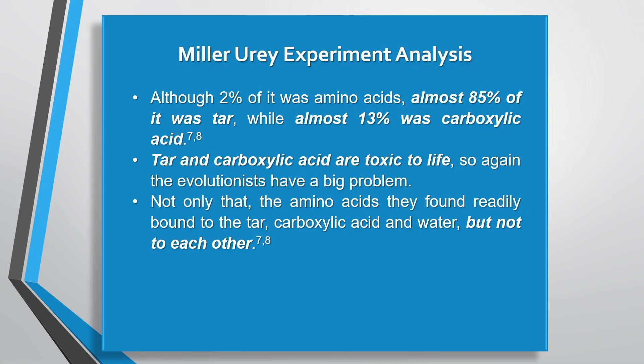Analysis of the reddish goo yielded more information that they didn't rush to report. Although 2% of it was amino acids, almost 85% of it was tar, while almost 13% was carboxylic acid. Tar and carboxylic acid are toxic to life. So the evolutionists have a big problem. Not only that, the amino acids found readily bound to the tar and carboxylic acid in the water — but not to each other.